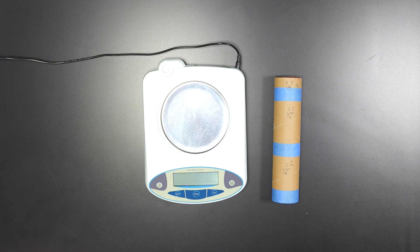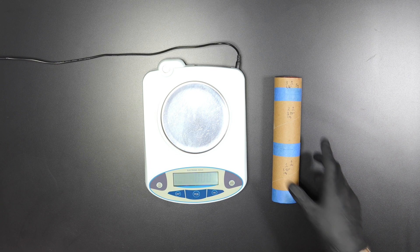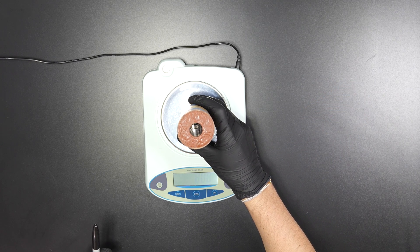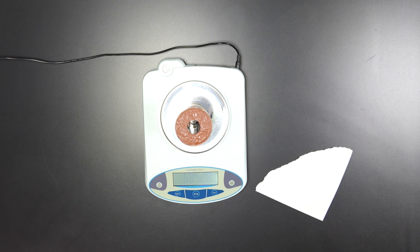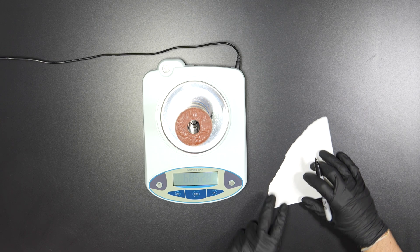To calculate how much propellant I have, I do not use how much was measured out in each pour. Not all of it gets out. Instead, I know the weight of the casing and tape, so I weigh the full grain and then subtract.